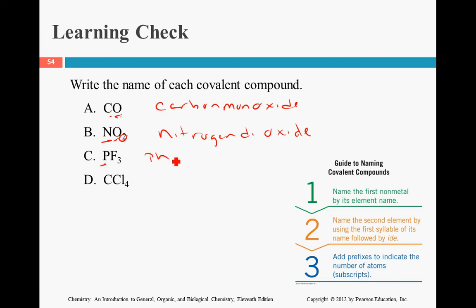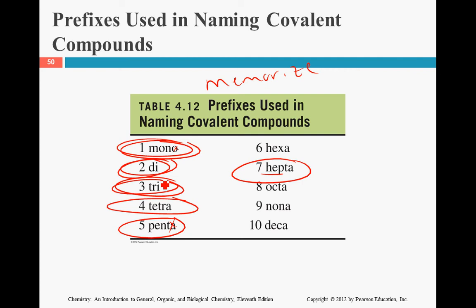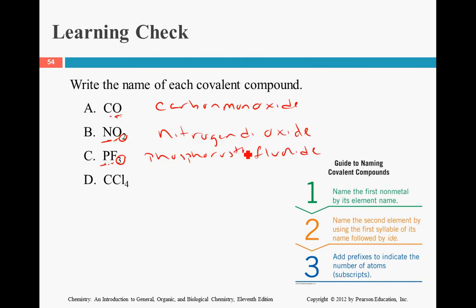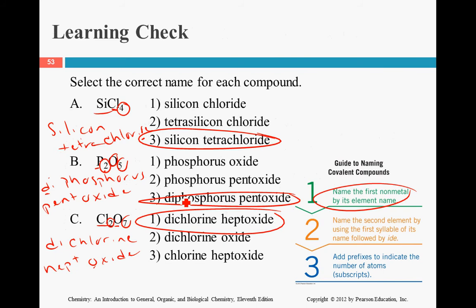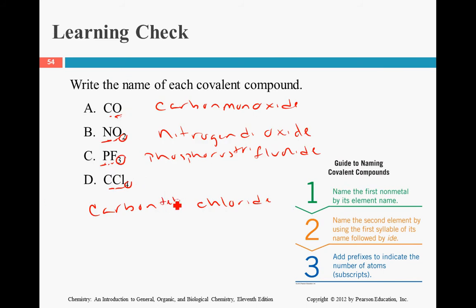P is phosphorus. Because the first one is a one, no prefix needed. The second one is fluorine, which becomes fluoride. There are three of them, and three is 'tri', so it becomes phosphorus trifluoride. The last one: C is carbon, it's a one so no prefix. Chlorine becomes chloride, and four is 'tetra', so the answer is carbon tetrachloride. Remember, those prefixes are simply memorization.